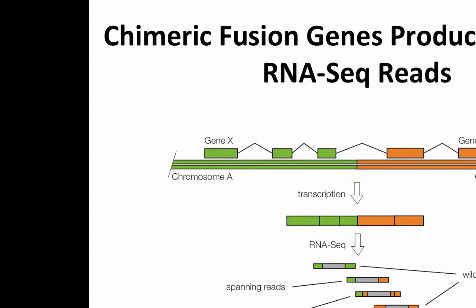Both spanning and split reads are discordant in that they can't be mapped to one contiguous location in the genome. The small difference is that for spanning reads, if we independently map each end, we can get a full contiguous alignment of each end to the original transcripts. For split reads, it's a little more difficult to map them because there's a fusion boundary in the middle.